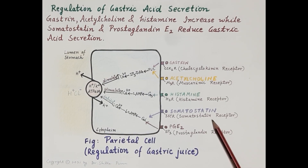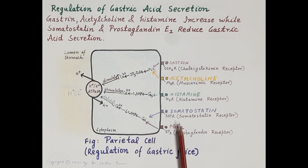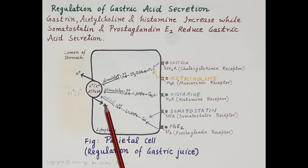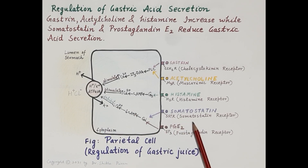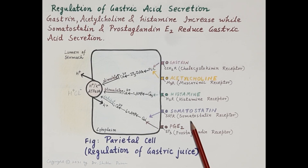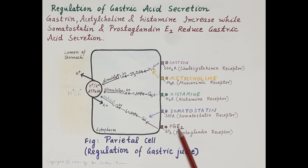Somatostatin and prostaglandin E2 both inhibit the parietal cells, thereby reducing the secretion of hydrochloric acid. Somatostatin is secreted by D cells (delta cells), which are endocrine cells located at the base of the gastric glands.